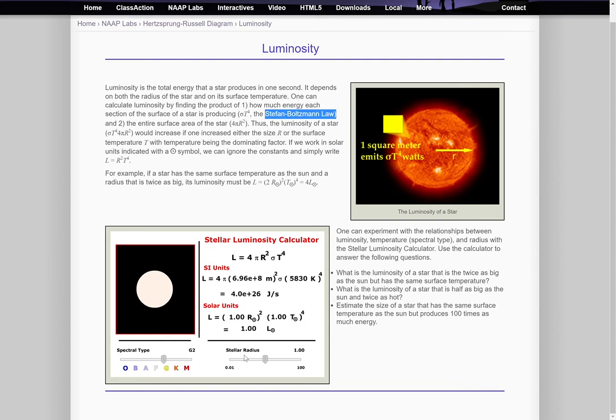So you have two sliders at the bottom of this. And what this allows you to explore is what happens if you change the radius of a star while keeping the surface temperature constant. So if I effectively double the radius,